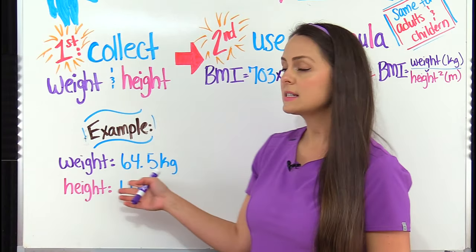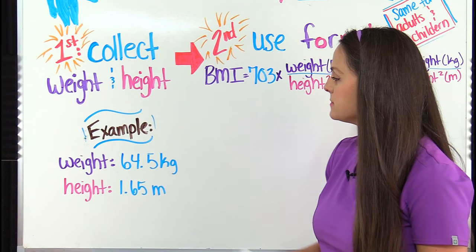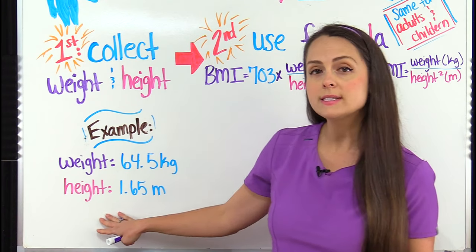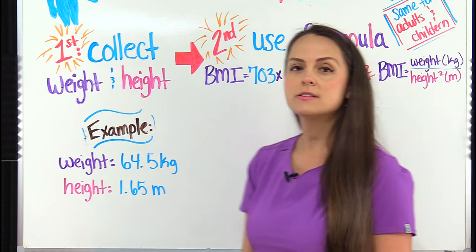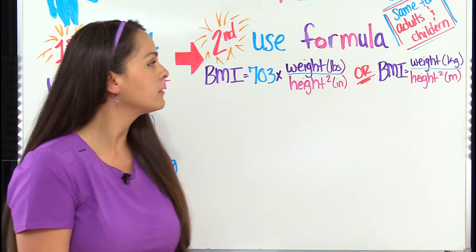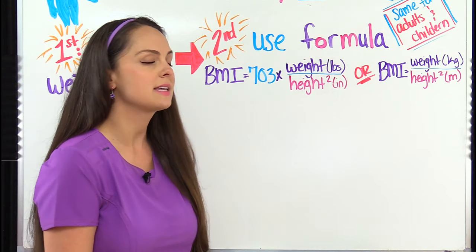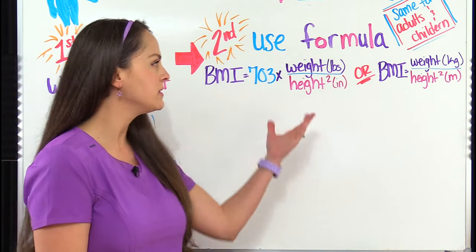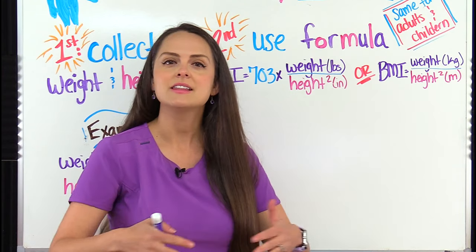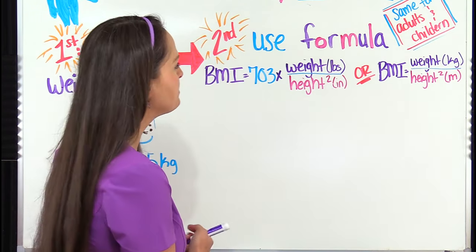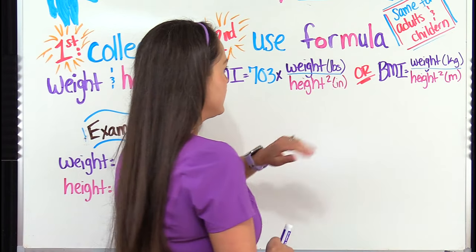Our next patient weighs 64.5 kilograms and they have a height of 1.65 meters. So we're dealing with kilograms and meters. Therefore we can use this formula which is in the metric units. And notice this formula is a little bit different than this one because we don't have to multiply by 703. So that's one less step that we have to take, it's a little bit simpler. We're going to plug it in.